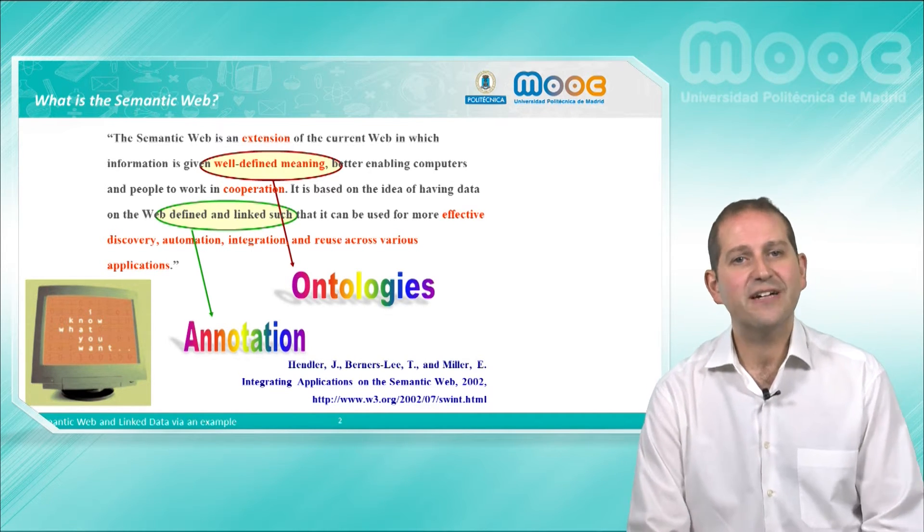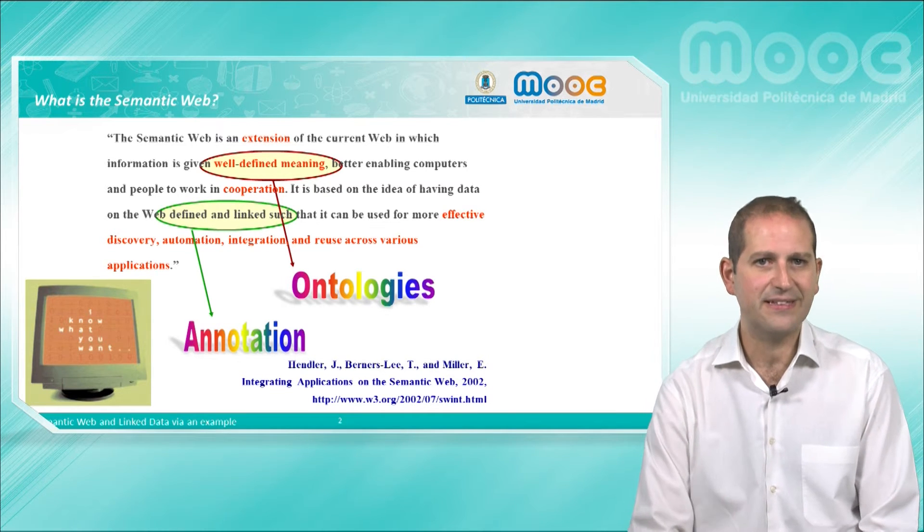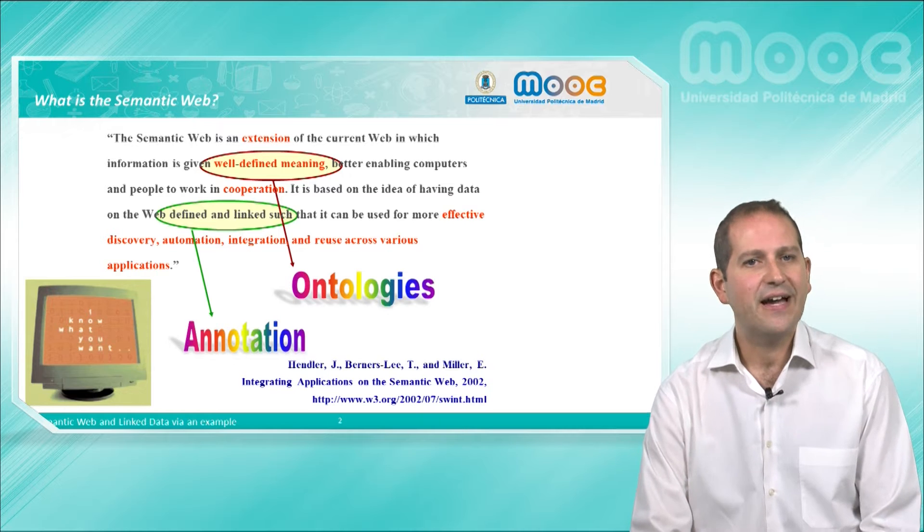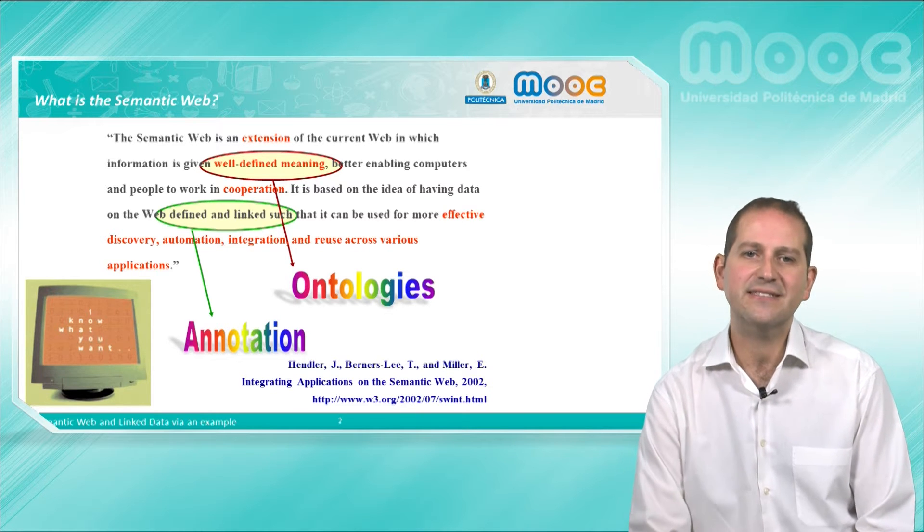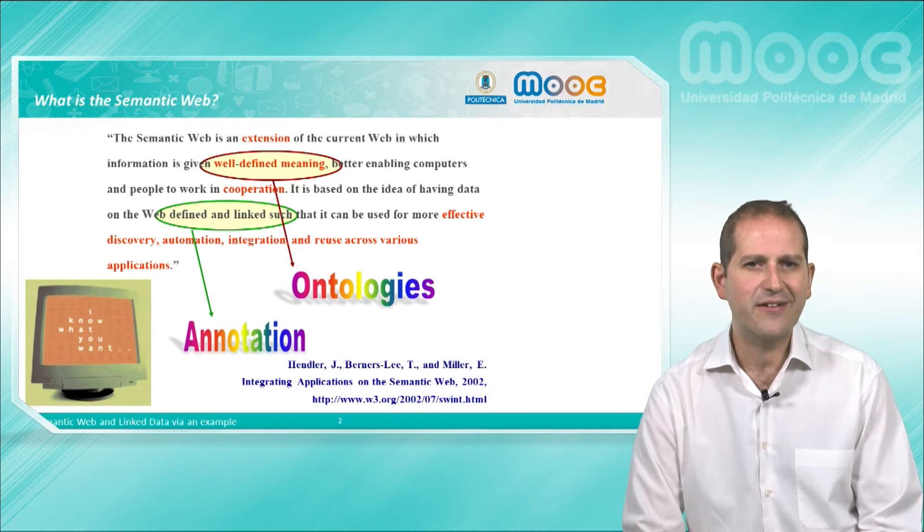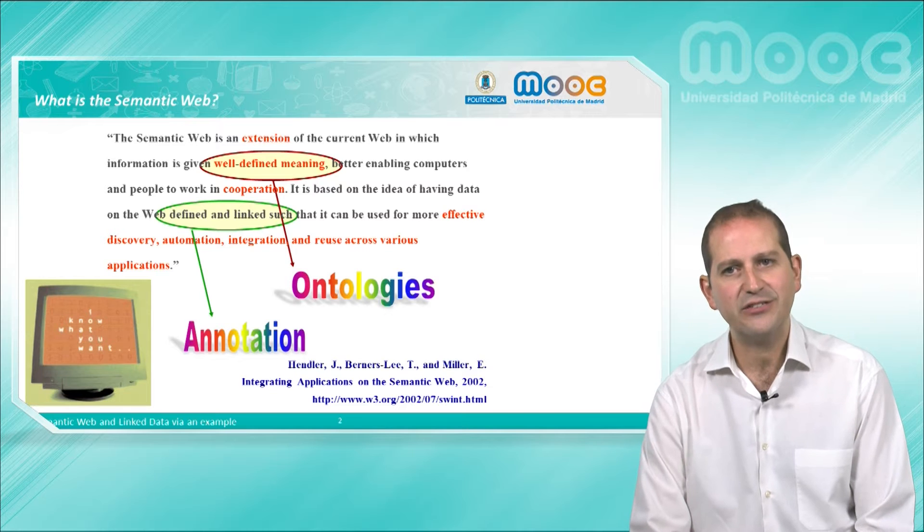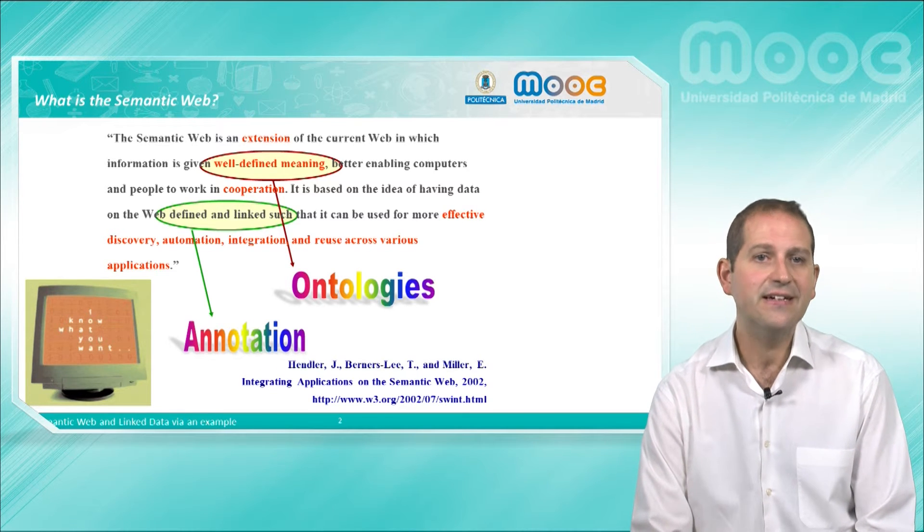Ontologies, which are the knowledge artifacts that we can use to provide the well-defined meaning that the definition is talking about, and annotations, as the way to make such data available in this Web extension. These annotations are normally available inside HTML pages, for instance using RDFA annotations or inserting JSON-LD code snippets inside those HTML pages.